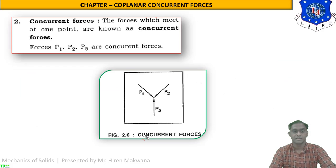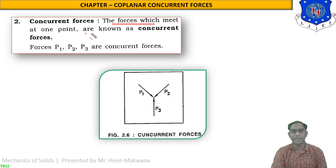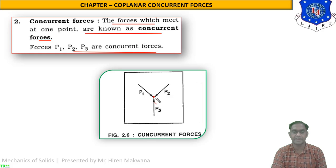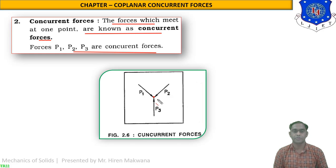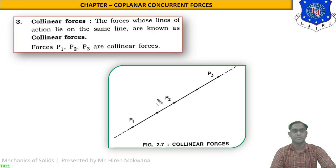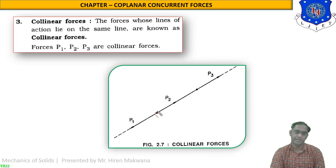The second system is concurrent forces — the forces which meet at one point are known as concurrent forces. In this figure, P1, P2, and P3 are all meeting at a single point, so this type of forces is known as concurrent forces.